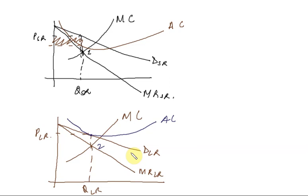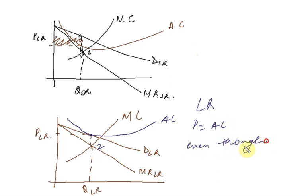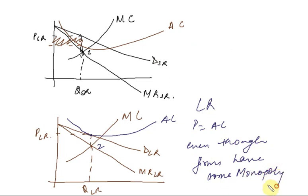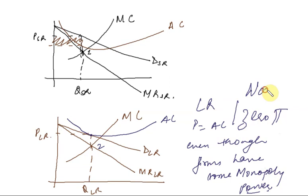Normal profit is also called zero profit because there is zero super normal profit. So in the long run, price equals AC. Even though firms have some monopoly power, they still earn only zero economic profit — only normal profit. That is the beauty of monopolistic competition.